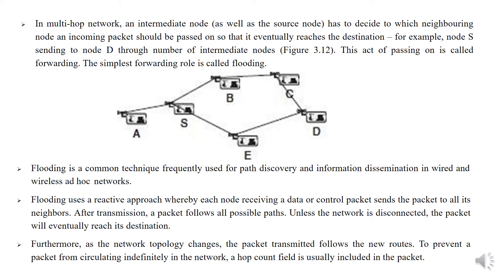In a multi-hop network, an intermediate node as well as the source node has to decide to which neighboring node an incoming packet should be passed on so that it eventually reaches the destination. For example, node 1 is sending to node 2 through a number of intermediate nodes. This act of passing on is called forwarding. The simplest forwarding rule is called flooding. Flooding is a common technique frequently used for path discovery and information dissemination in wired and wireless ad hoc networks. Flooding uses a reactive approach whereby each node receiving a data or control packet sends the packet to all its neighbors.